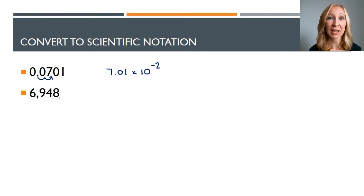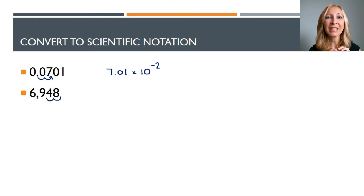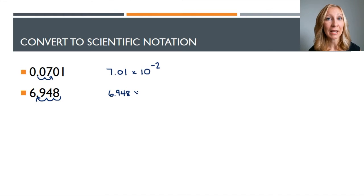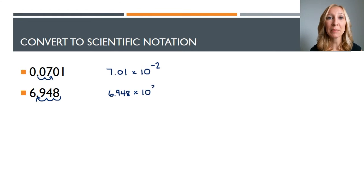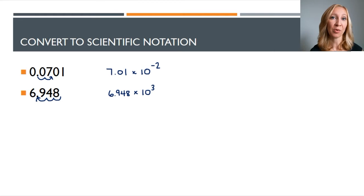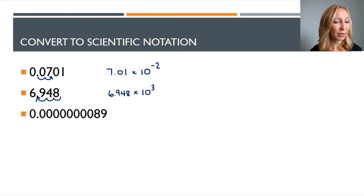Now we have six thousand nine hundred and forty-eight. The decimal isn't written in, but it lies at the end of the number — if not represented, you can assume it's there. So we have six point nine four eight, and we moved the decimal to the left three places to get a number greater than or equal to one but less than ten. So we get six point nine four eight times ten to the third.